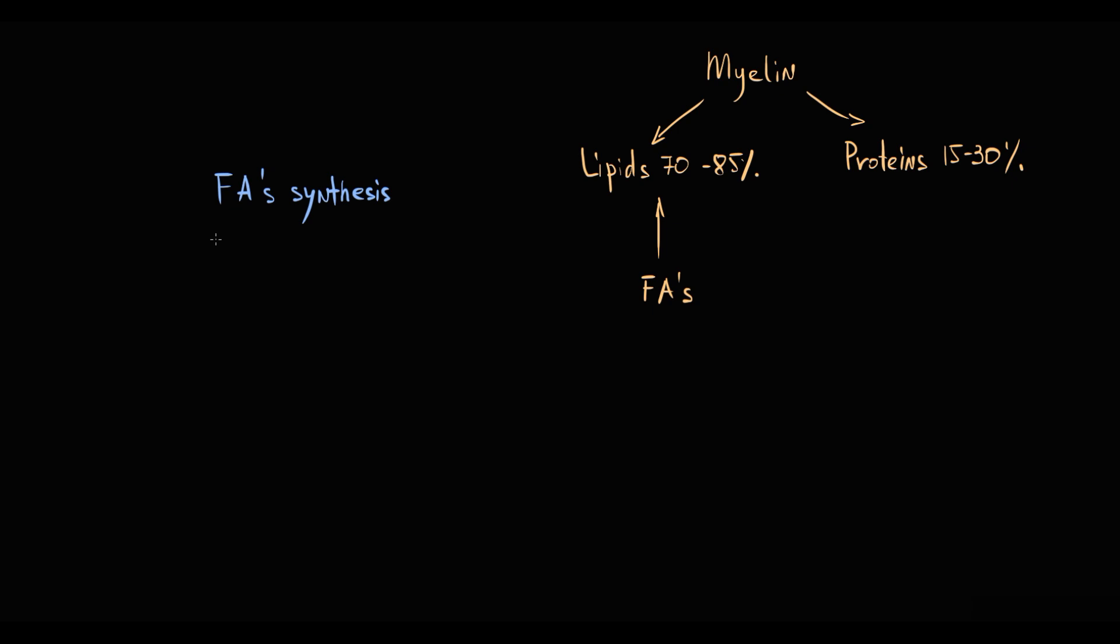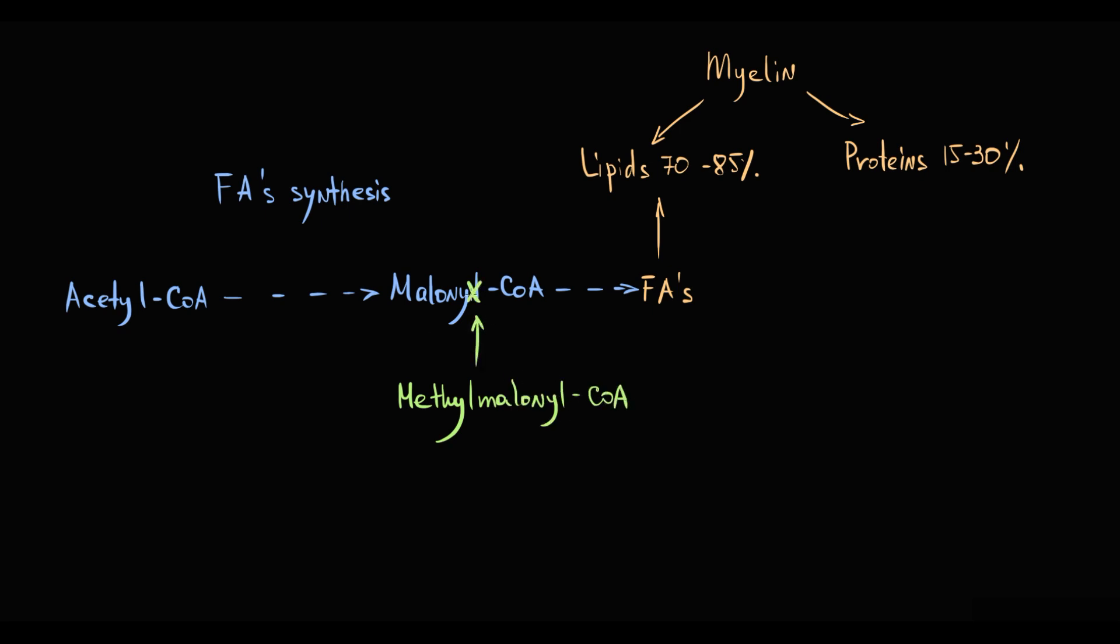As we know, fatty acids are produced from acetyl-CoA, and one of the intermediate metabolites in fatty acid synthesis is malonyl-CoA. It turns out that methylmalonyl-CoA can substitute malonyl-CoA in fatty acid synthesis. And this results in production of branched-chain fatty acids that are not the normal structural components of myelin sheath. So this disrupts entire myelin structure and causes demyelination of neural cells.